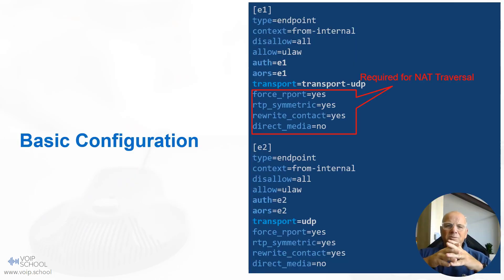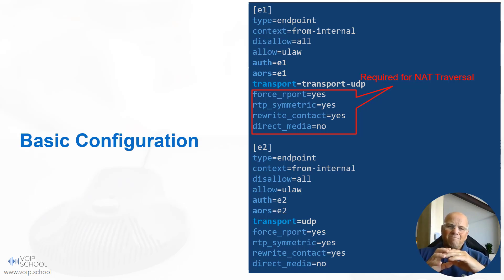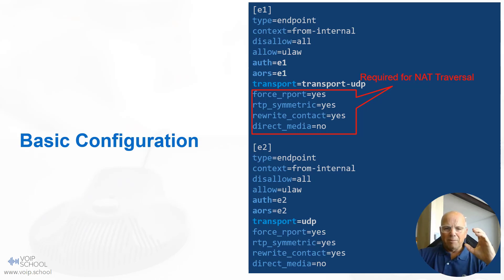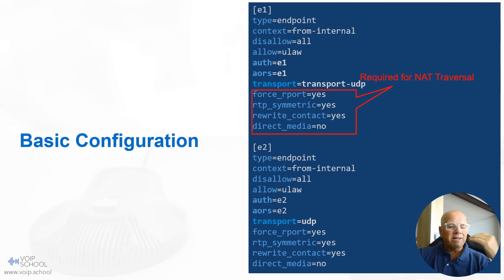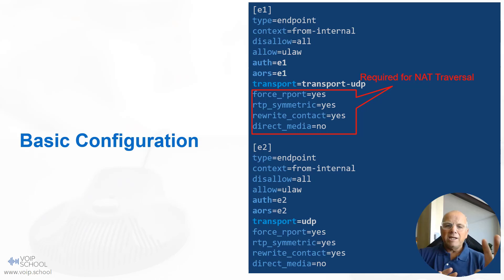Continuing with the basic configuration, we have two endpoints defined — E1 and E2. For E1, the transport is UDP. Since we are using a server on DigitalOcean, we need to set up NAT traversal. We'll use four parameters for this: force_rport equals yes for symmetric SIP signaling; rtp_symmetric equals yes for symmetric RTP signaling; rewrite_contact equals yes to rewrite the external contact on the system; and direct_media equals no, so media must go through Asterisk and cannot go peer-to-peer. These settings are needed to run our endpoints behind a NAT device.